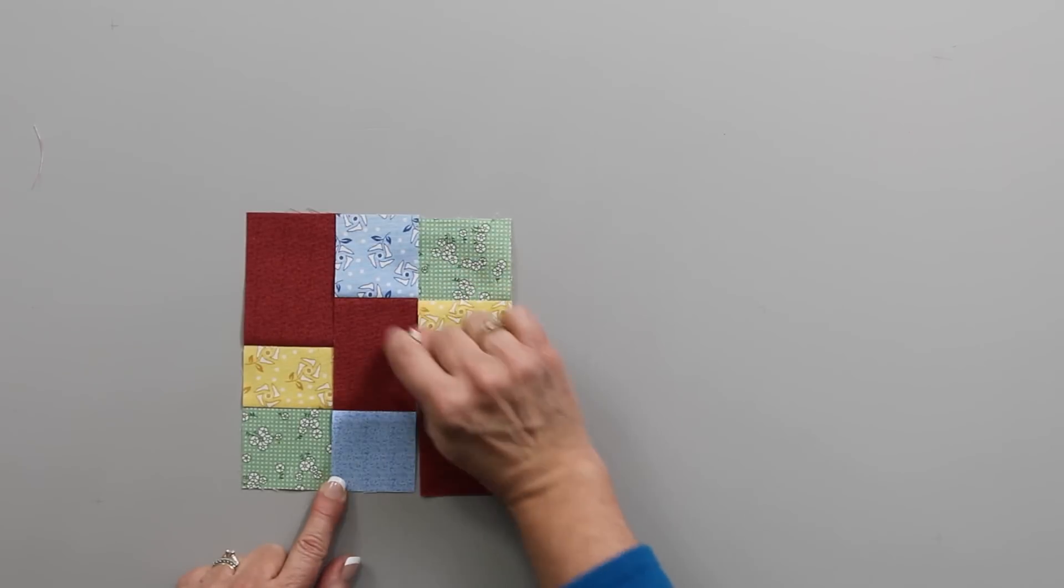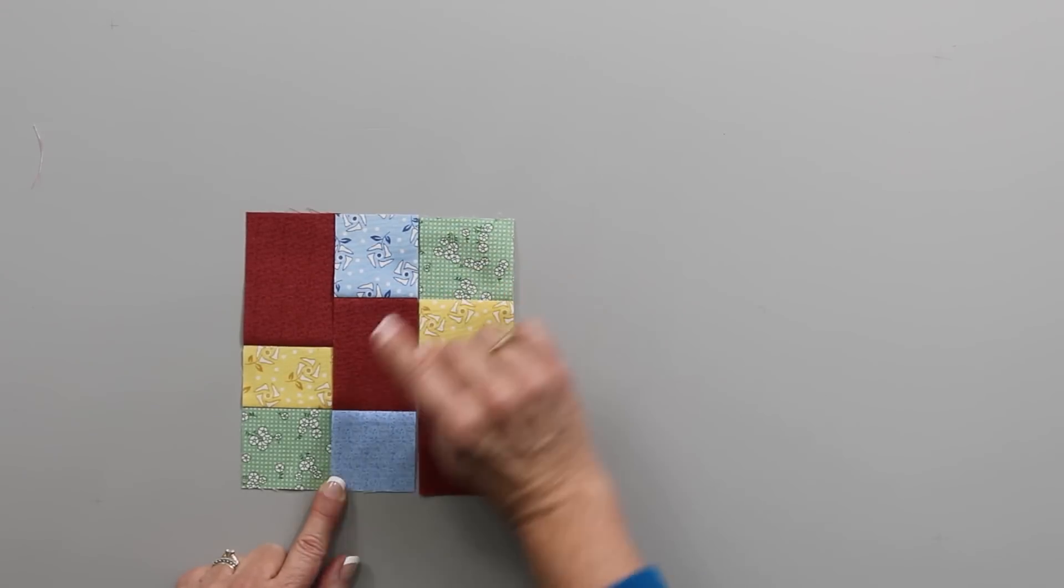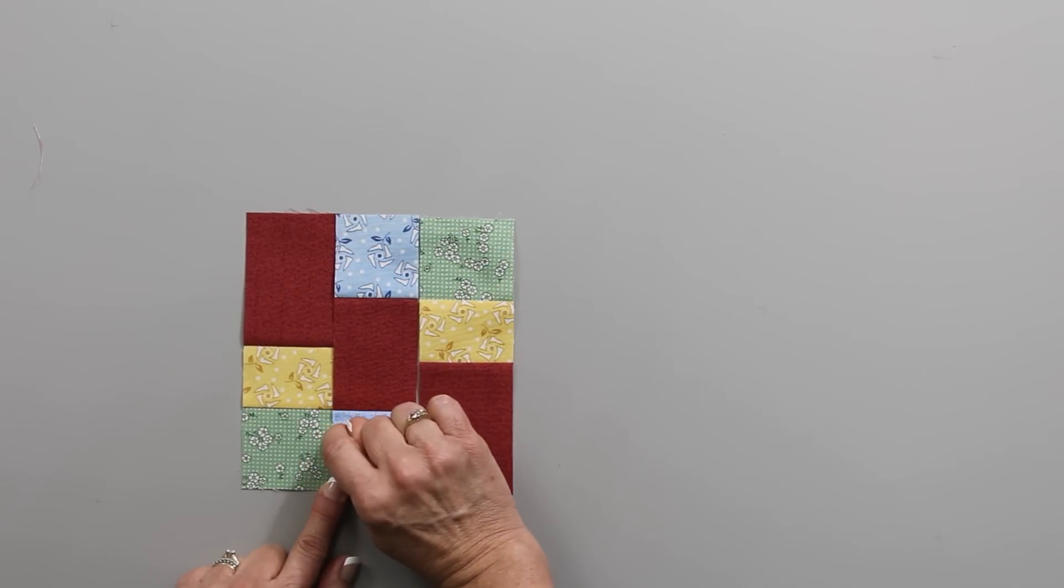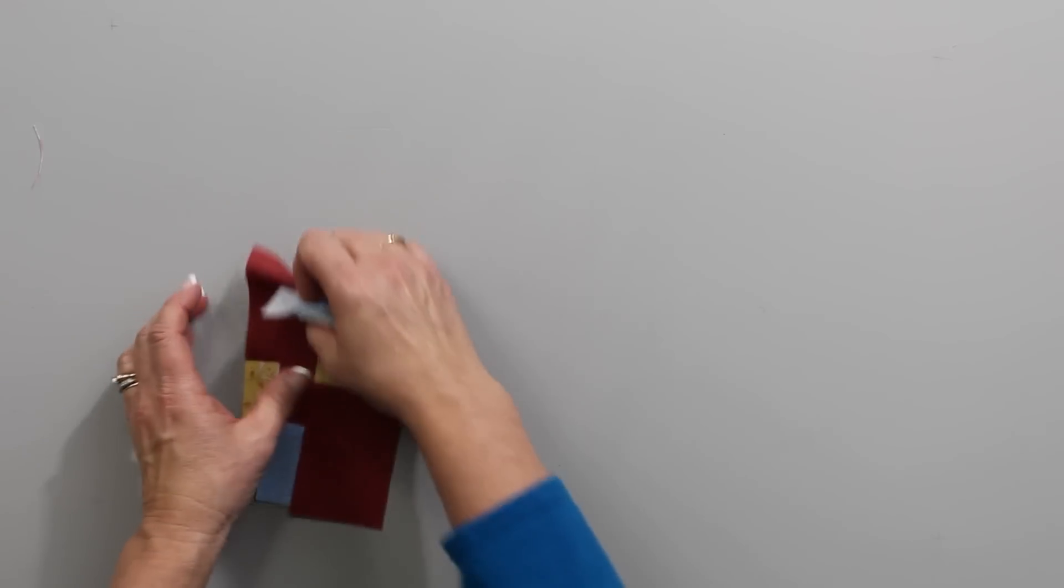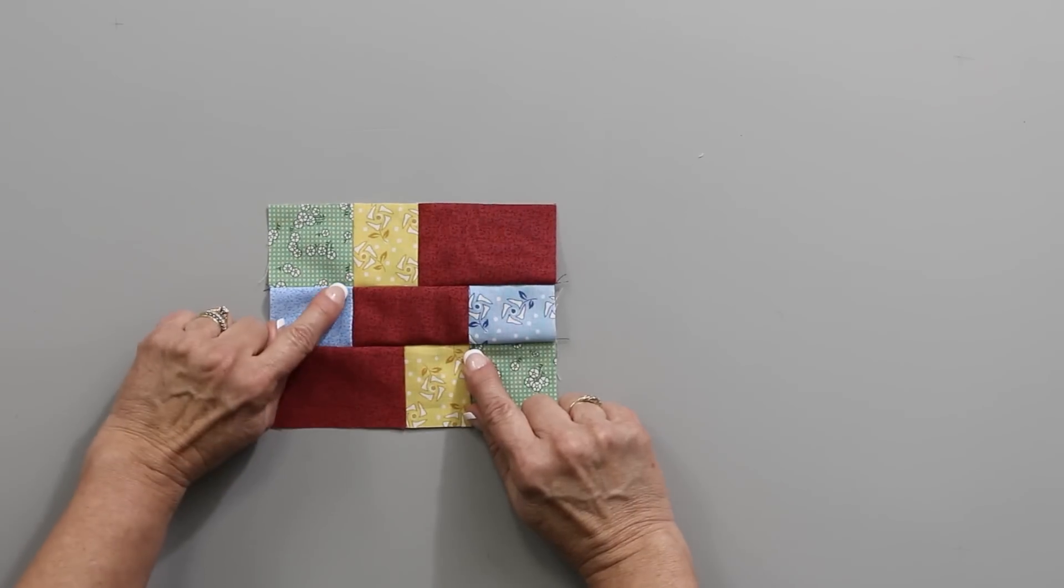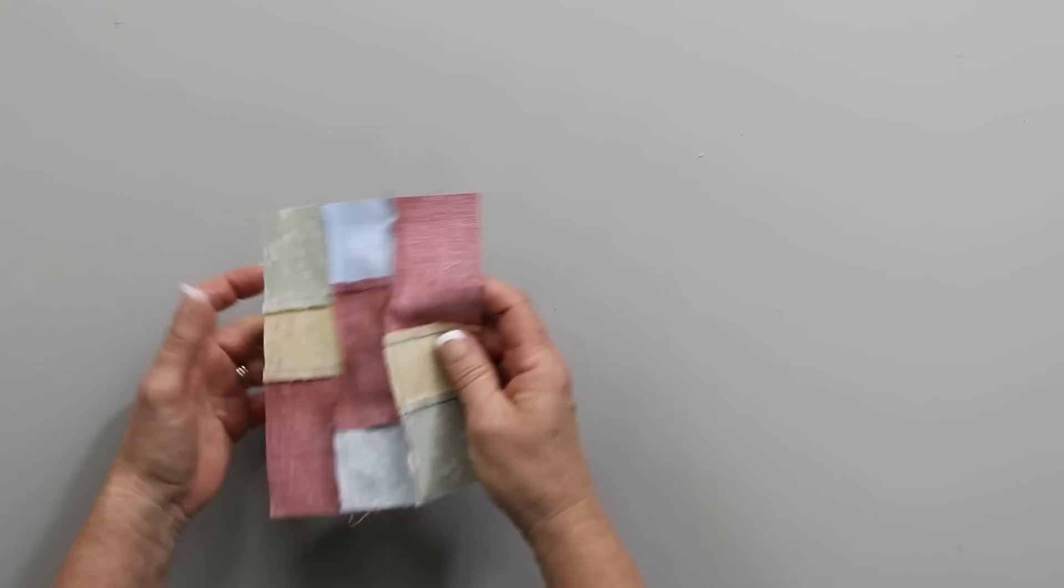You're going to then take these units and sew them together into a rectangle. There's not a lot of matching that needs to happen. You'll only be matching seams at this intersection right here and this intersection right here. So it's pretty simple to do. Use your best quarter of an inch. When you do that, you're going to see nesting seams here and here when I did my stitching along here.